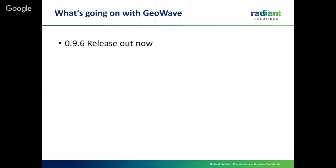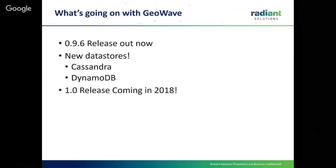Our 0.96 release is out now. We have two new data stores coming hopefully very soon: Cassandra and DynamoDB. We don't want to release them until we feel confident they are up to the standards we've set for our HBase, Accumulo, and Bigtable implementations. Our 1.0 release is coming hopefully this year. The big thing there, aside from many new data stores, is we want to guarantee our users that we're not going to break backwards compatibility.